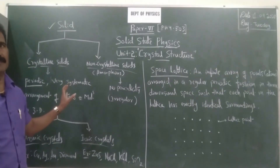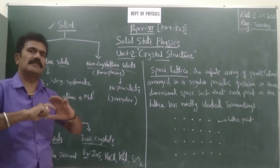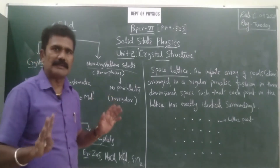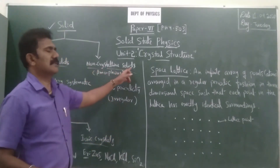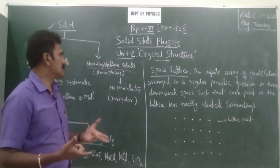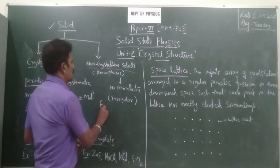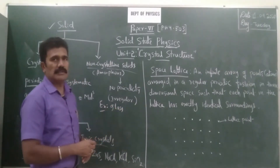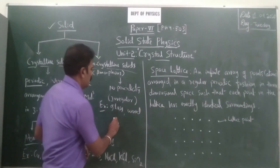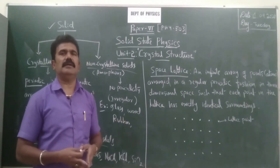In three dimensions, if there is a periodic, systematic arrangement of an array of atoms, it is considered a crystalline solid. Suppose there is no such periodicity — that means the atoms are completely randomly arranged with no periodicity at all — then such solids are non-crystalline solids. For example, glass is a non-crystalline, amorphous material. Wood, rubber, polythene, and plastic materials are also examples of non-crystalline solids.